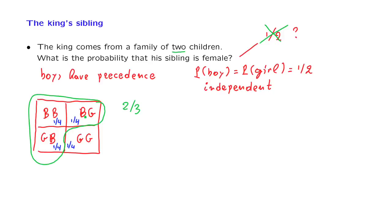At least one turned out to be a boy, and that boy became a king. Under this situation, indeed, the probability that the sibling of the king is female is 2 thirds.